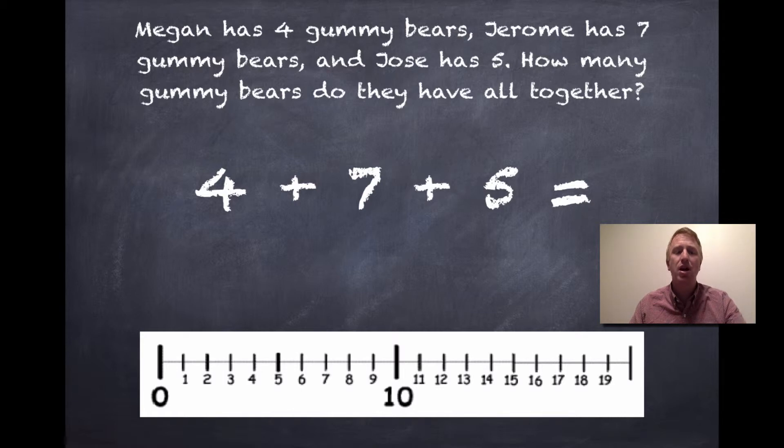Now, how could I use a number line to help show this? Well, I would start over here at zero, and I would jump all the way to four. Now, I need to add seven to that four. So, I go one, two, three, four, five, six, and seven. So, I jump my next jump all the way over to my eleven.